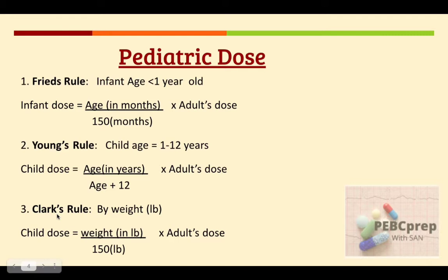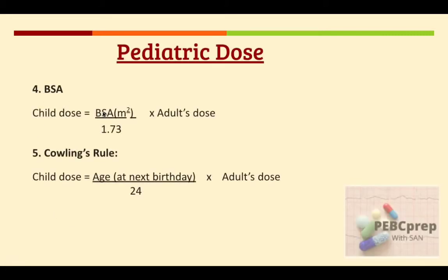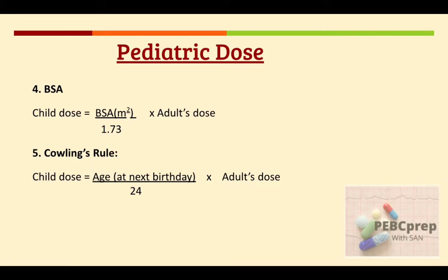If we get weight in our exam, we apply Clark's rule. If we get a value in meter square, we identify it as body surface area by the unit and apply the BSA formula. The other rule is called Cowling's rule, which is not used as much. Mainly we use Young's rule and Fried's rule. The first three are more popular than the fifth one, but it is also a way to calculate child dose.